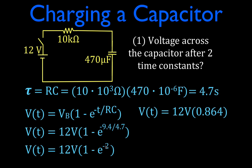The voltage with respect to time is 12 times 0.864. After one time constant, the voltage across the capacitor is 63.2% of the source voltage. After two time constants it's 86.4%, after three it's about 95%, then 98.2%, and after five time constants it's 99.3%. In this case, with two time constants at 86.4% of the source, the voltage across the capacitor will be 10.4 volts.